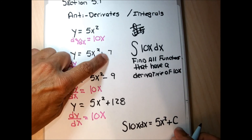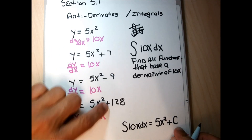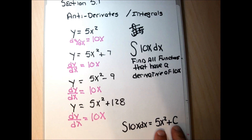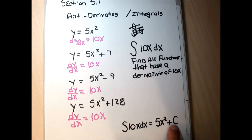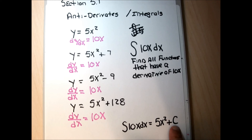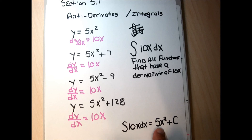The 7, the negative 9, and the 128 are all constants — numbers without a variable. All of these functions are going to have a derivative of 10x because the derivative of 5x squared is 10x, and the derivative of the constant C is zero. So the antiderivative of 10x dx is 5x squared plus any constant C.